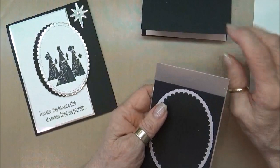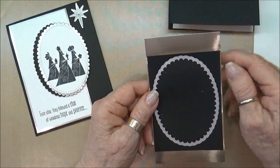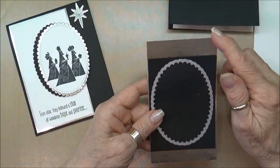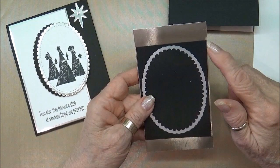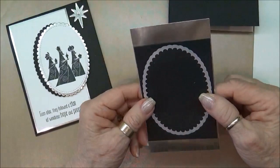I have a piece of our new champagne foil paper. It's so beautiful. I think you're just going to really love it. And this is cut three by five and a quarter. Then I have a piece of basic black that is two and three quarters by three and three quarters.